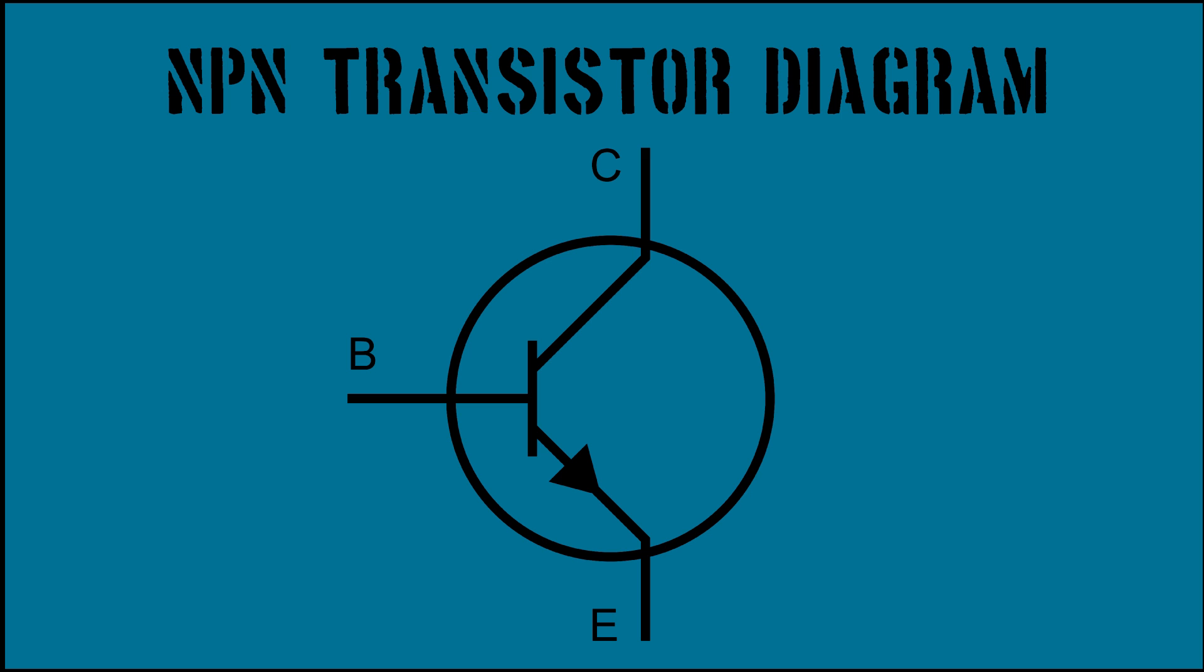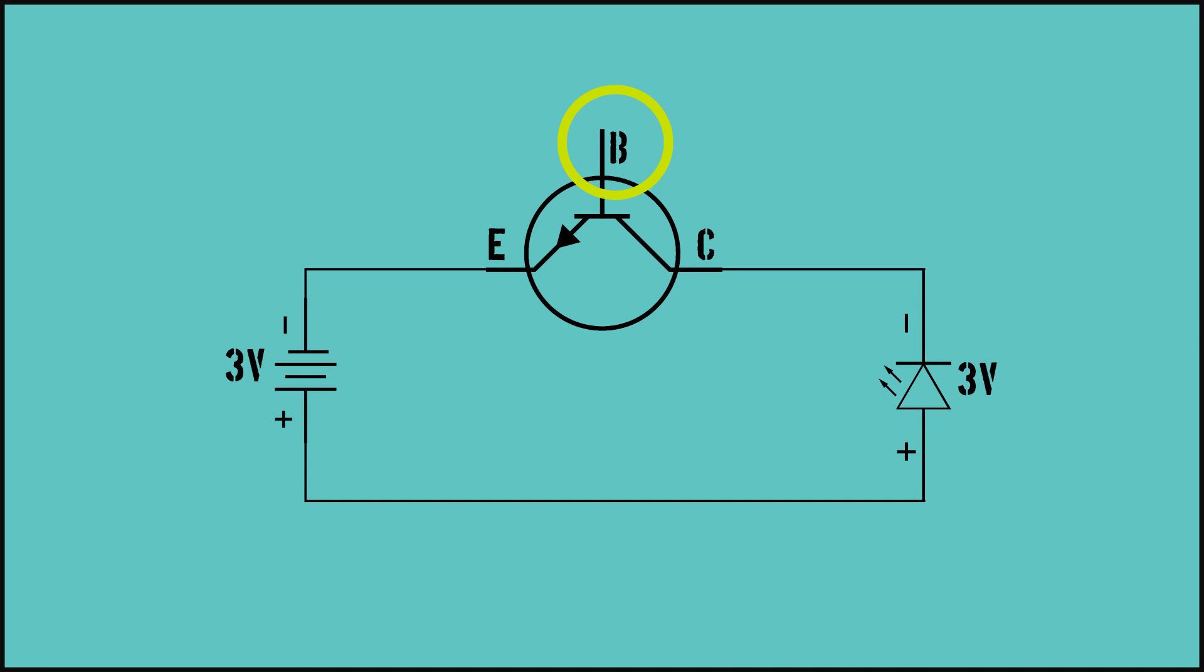The NPN transistor has three pins. In this diagram, you can see that the device has a base pin, a collector pin, and an emitter pin. The transistor is wired in series with a power supply and an LED. What you can see is that the LED is not lit because there is no current flowing through the transistor. This is because, by default, transistors are in their non-conductive state. Something must change to turn the transistor on. To do this, we must apply a voltage to the transistor.